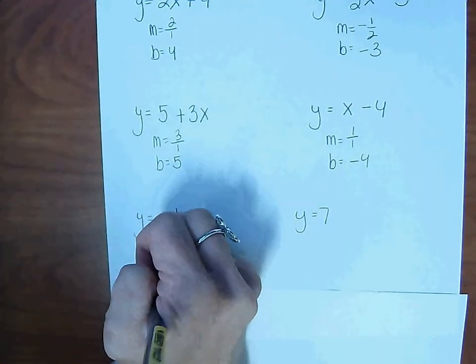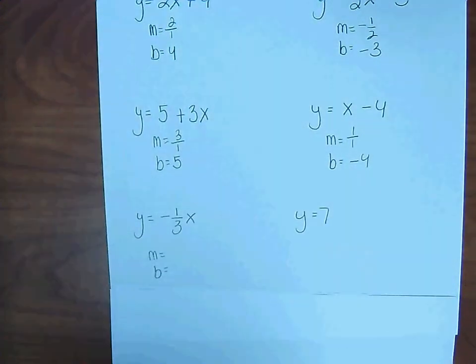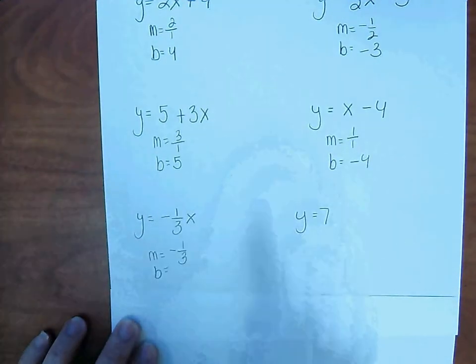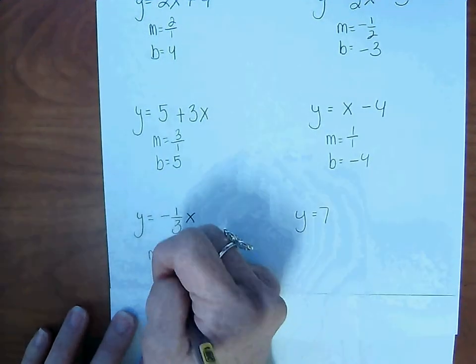y = -1/3x. Slope is -1/3. And the y-intercept—well, there's nothing there. So that tells you the y-intercept is 0.